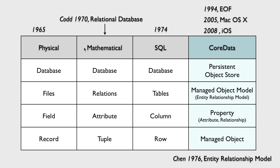Relational database systems as defined by Codd required much processing resources. It was not until the mid-1980s that computing hardware became powerful enough to make them widely used. The corresponding terms that Codd used in his model were relations, attributes, and tuples. SQL was initially developed at IBM by Chamberlain and Boyce in the early 1970s. SQL introduced its own vocabulary: table, column, and row.